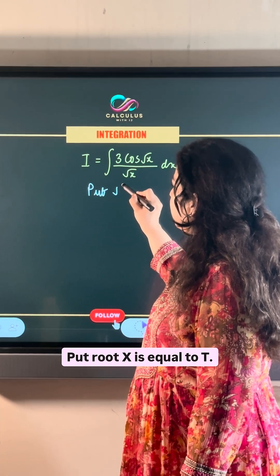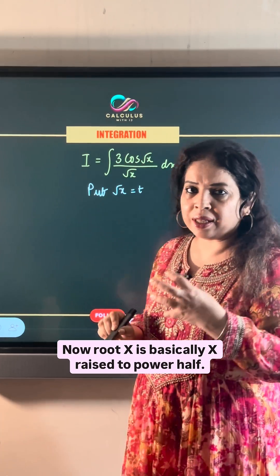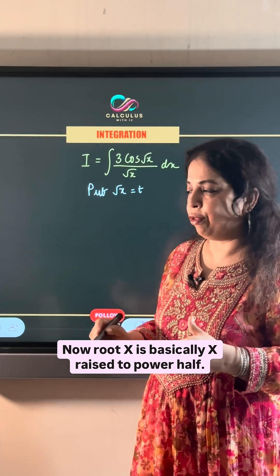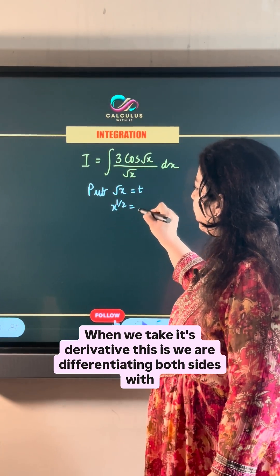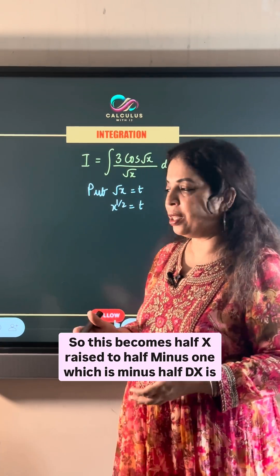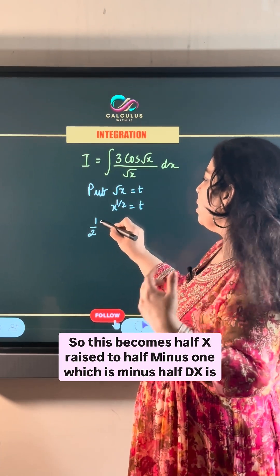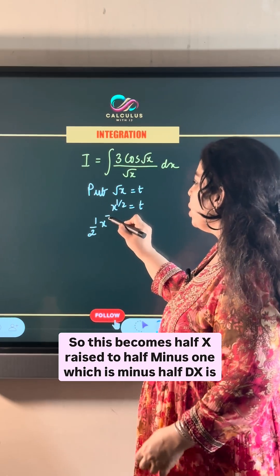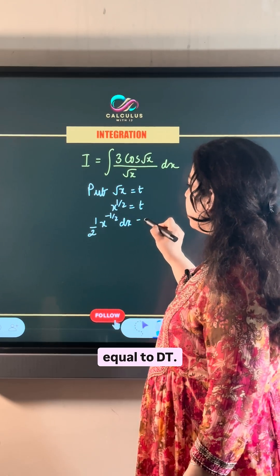Put root x is equal to t. Now, root x is basically x raised to the power half. When we take its derivative, this is, we are differentiating both sides with respect to x. So, this becomes half, x raised to the power half minus 1, which is minus half dx is equal to dt.